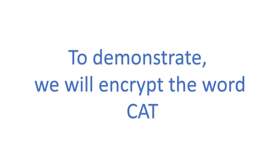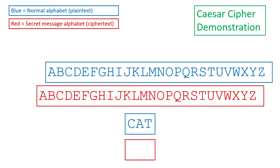To demonstrate, let's encrypt the word cat using our Caesar cipher. So the letter c in cat will be replaced with the letter d, the letter a will be replaced with the letter b, and the letter t will be replaced with the letter u. So the word cat comes out as d, b, u.